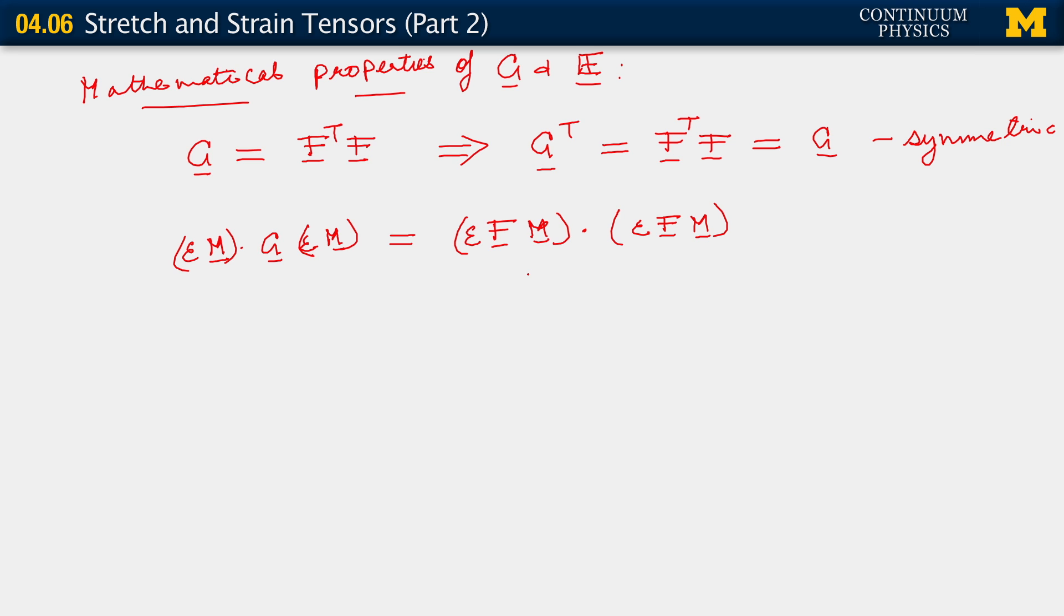But what do we know about the term on the very right? It is a square, right? Because it's the magnitude of a vector. It's the magnitude of a vector squared. And therefore, this term is greater than or equal to 0. In fact, this term is greater than or equal to 0.